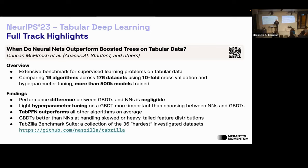They also look at TabPFN from Frank Hutter's team in Freiburg — an approximate Bayesian inference framework for classification on tabular data using a single forward pass. TabPFN outperforms most algorithms in most cases, but is limited in applicability to large datasets. Their benchmark results and Python bindings are shared on GitHub so others can reuse them for their own models.